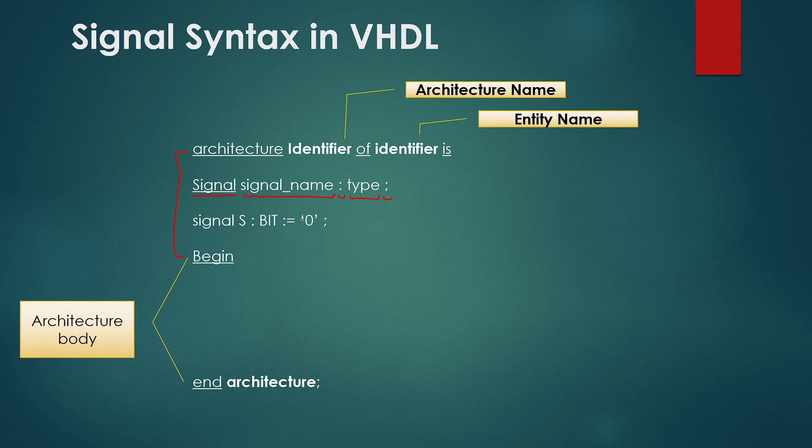There are a few important things to remember about signal. Unlike entity ports signals are declared without directions. You can declare signal inside the architecture but you cannot declare them inside the process but you can use them inside the process as well. You can define as many signals as you want in your design.